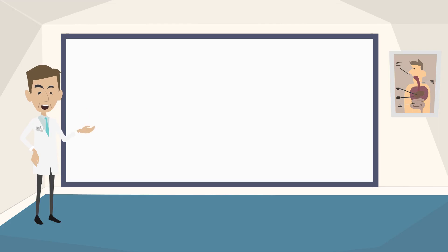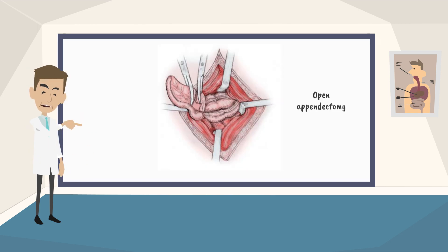The main treatment for appendicitis is surgery to remove the appendix. This surgery can be done in two ways. First is open surgery. During an open surgery, the doctor makes a cut near the appendix that is big enough to pull the appendix through.